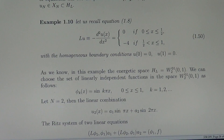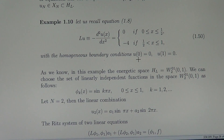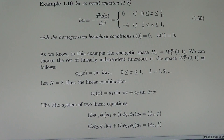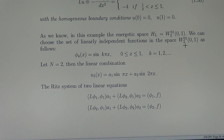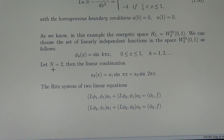Example. Let us recall the example we have considered before: minus the second derivative equals 4 when x is from 0 to one-half, and minus 4 if x is from one-half to 1. This is a discontinuous right-hand side, with homogeneous boundary value conditions: u(0) equals 0 and u(1) equals 0. We know that in this example the energetic space H_L is the Sobolev space W_0^{1,2} on the interval [0,1]. So we choose the set of linearly independent functions in W_0^{1,2} on [0,1] as Phi_k(x) equals sin(k·pi·x) for k equals 1, 2, 3, and so on. Let us choose n equals 2.